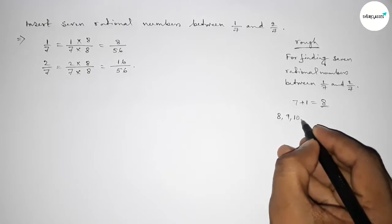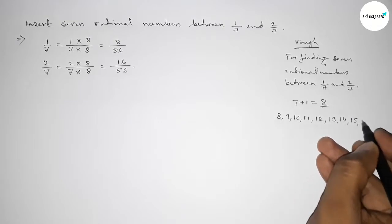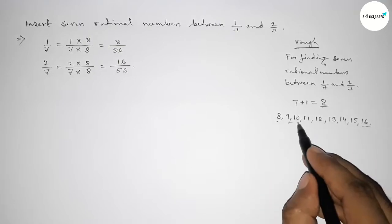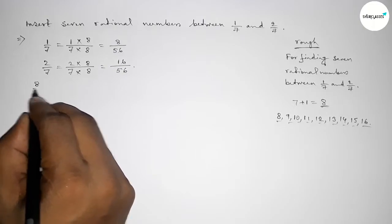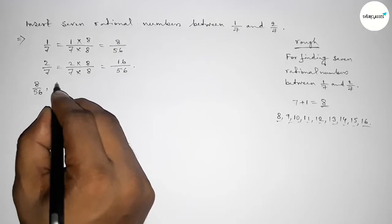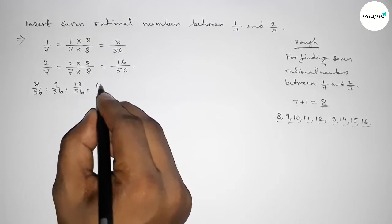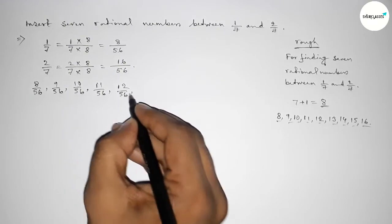So now here write down all the rational numbers first. First one is 8/56, then 9/56, 10/56, 11/56, 12/56...